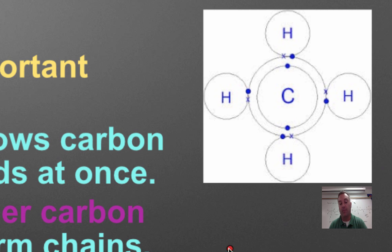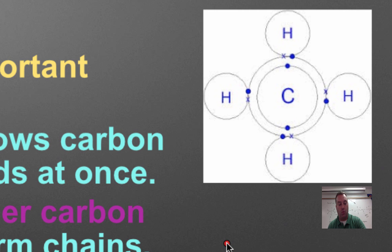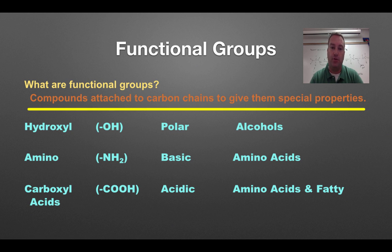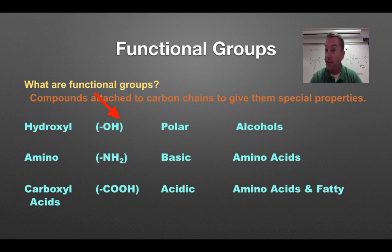So carbon can form four bonds at once. Now, to make carbon atoms kind of special, you need to add special things to them, and these things are called functional groups. There are more functional groups than what you can see here on the screen, but for us, we just need to memorize these three. Hydroxyls, which are an OH, they're polar. Think of the OHs in water. The oxygen will hog the electrons. It'll be partially negative, whereas the hydrogen will become partially positive.